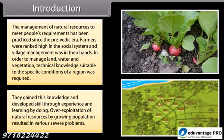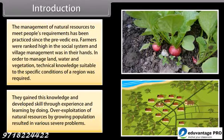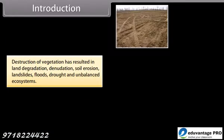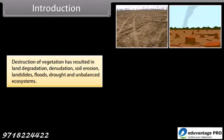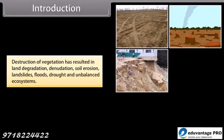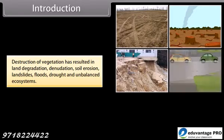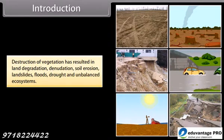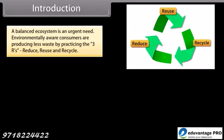Overexploitation of natural resources by a growing population has resulted in various severe problems. Destruction of vegetation has resulted in land degradation, denudation, soil erosion, landslides, floods, drought and unbalanced ecosystems. A balanced ecosystem is an urgent need.